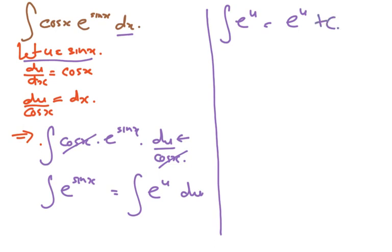And then plus c. Now we don't want it to be in terms of u - we want it in terms of x. Substitute your u, which is sine x, so e to the power of sine x plus c.